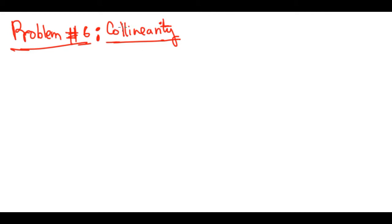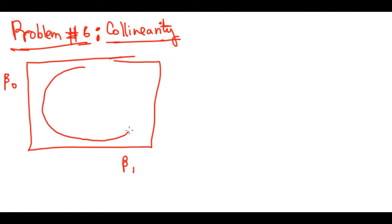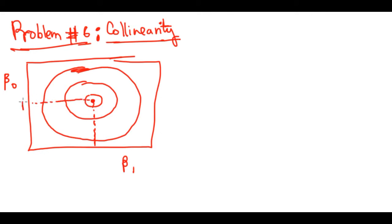So how would you identify and explain collinearity? Let's look at something we drew earlier — the RSS with beta one and beta naught. Those contour lines relate areas of similar RSS, and the combination in the middle gives us the lowest RSS. That was for predictors that do not have collinearity.